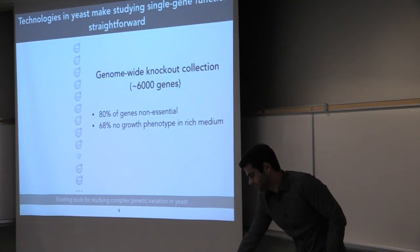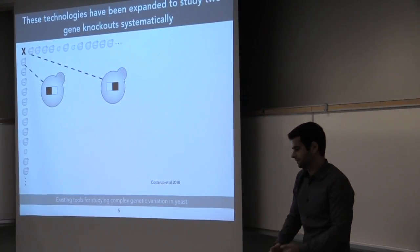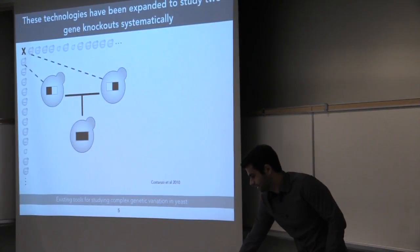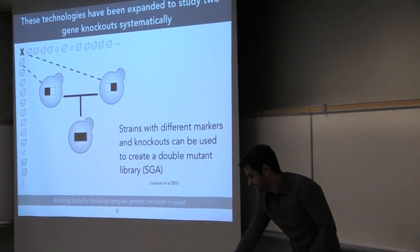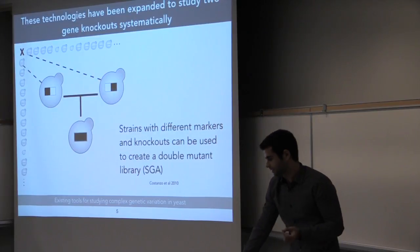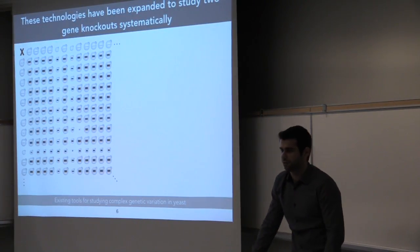So to expand this, people started making these double knockout combinations in which you combine two single knockouts of a gene in a given cell. And this is done using the SGA technology, for example, in Charlie Boone's lab. And what you see with these double knockout profiles are that many genes combine to do unexpected growth effects.